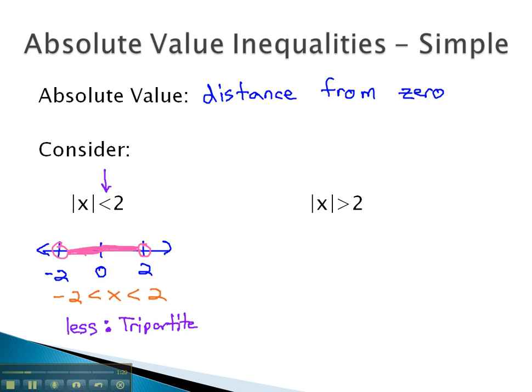Let's consider, though, what happens when the absolute value is greater than a number. Now we want the distance to be greater than 2, which means from 2, we want our distance to go out, or to be more than 2, going off to the right.